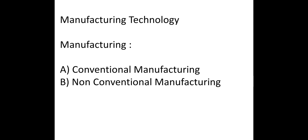There are mainly two types of manufacturing. First is conventional manufacturing process, and second is non-conventional manufacturing process.